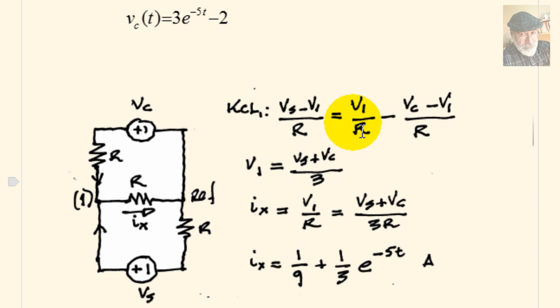Which solved for V1, and no surprise, V1 comes as a function of the value of Vs, the original source, and of Vc, the voltage in the capacitor, is the sum of them divided by 3. With that voltage, V1, Ix is just V1 divided by R, which is the sum of the two voltages divided by 3 times the value of the resistance.